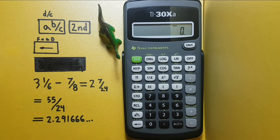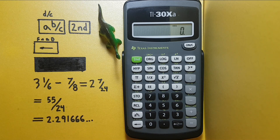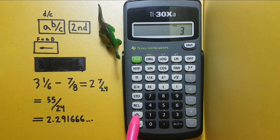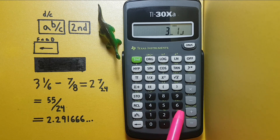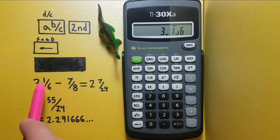To do this, let's say we wanted to enter 3 and 1 sixth — we would go 3, ABC, 1, ABC, 6. This is now 3 and 1 sixth.